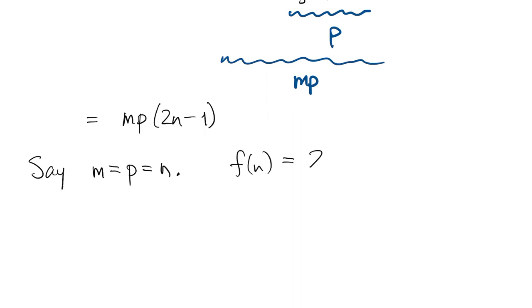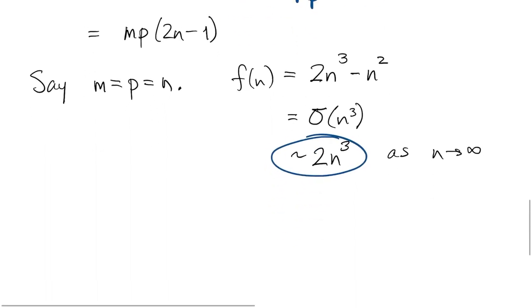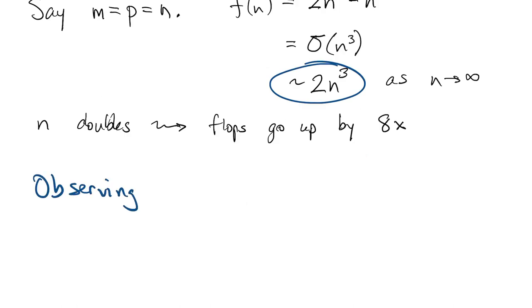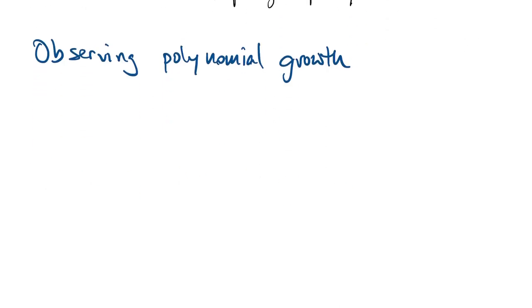Now that gives us three parameters, it's a little complicated, so let's take the simplest case where both matrices are square. And in that case, the flop count is 2N cubed minus N squared. So we'd say that this is order N cubed, O of N cubed, and it's asymptotic to 2N cubed. So whenever N doubles, you'd expect the flop count to go up by about a factor of 8 when N is large. There are some tricks we have for trying to observe this kind of polynomial growth in practice.